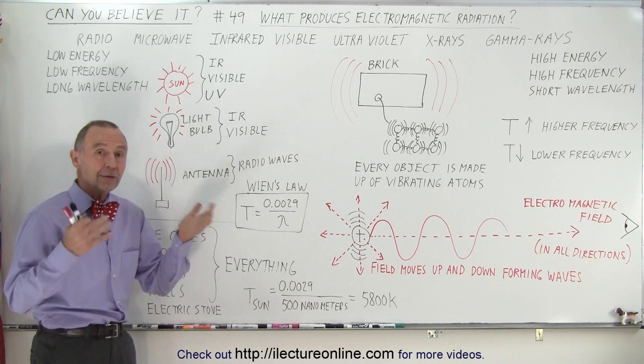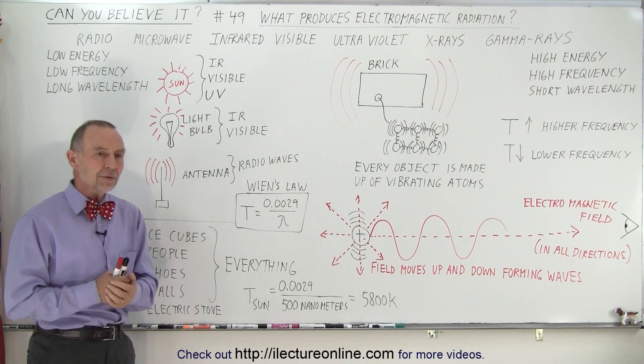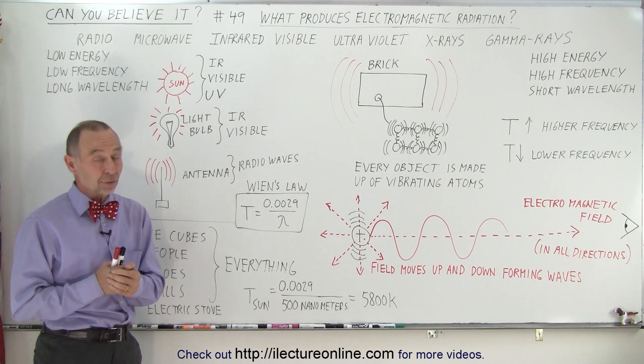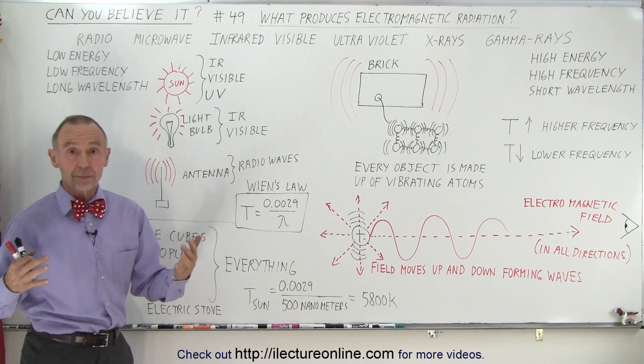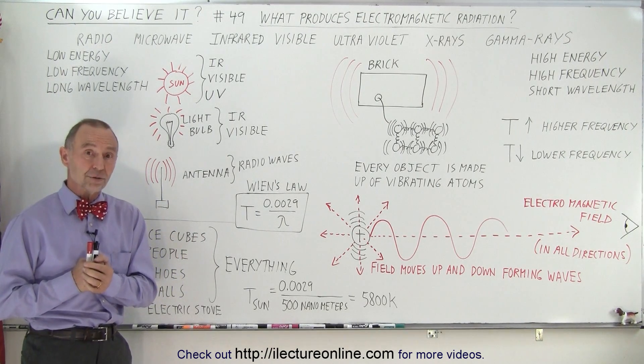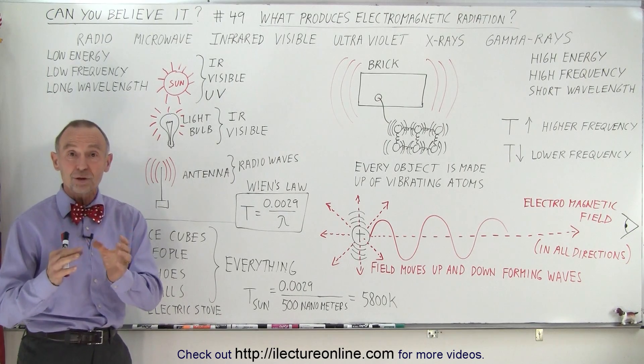Antennas put out radio waves. So we can think of some items, but it turns out that the answer really is everything produces electromagnetic radiation, even the ice cubes in your freezer.